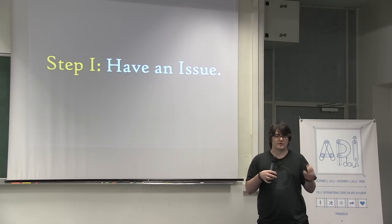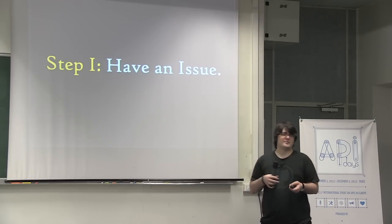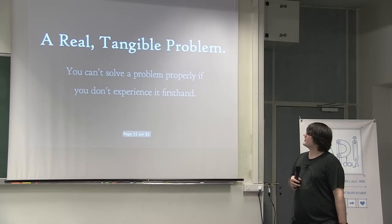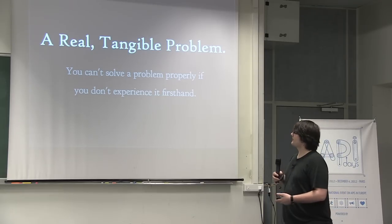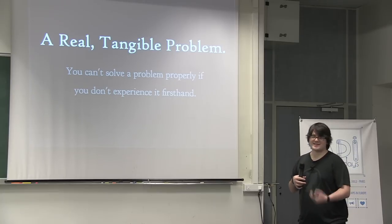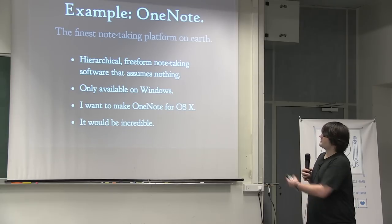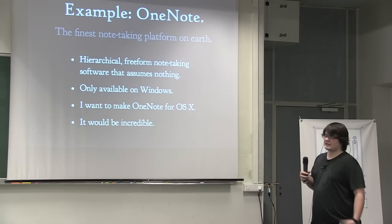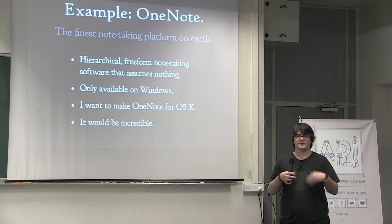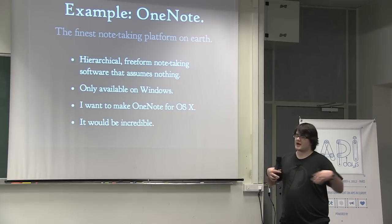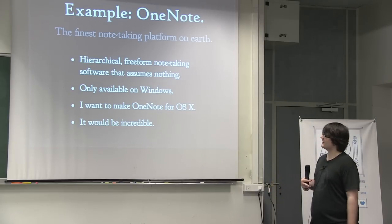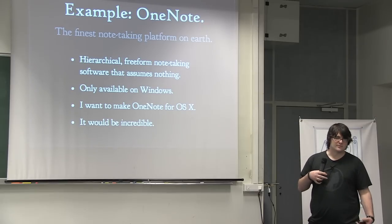If we want to build an application with a lot of focus on our API, there are a couple of things you can do. The first thing I like to do is have an issue — it's really hard to solve a problem if you can't directly experience it firsthand. If you're not the one with the problem, it's hard to identify with it and fix it properly. Here's an example: I love this application for Windows called OneNote. It's a really great note-taking application that allows you to do free-form notes in a hierarchy. It doesn't assume anything about your workflow — you can architect things any way you want, do cross-referencing, hand-write notes, throw files into it, and it always remembers them.